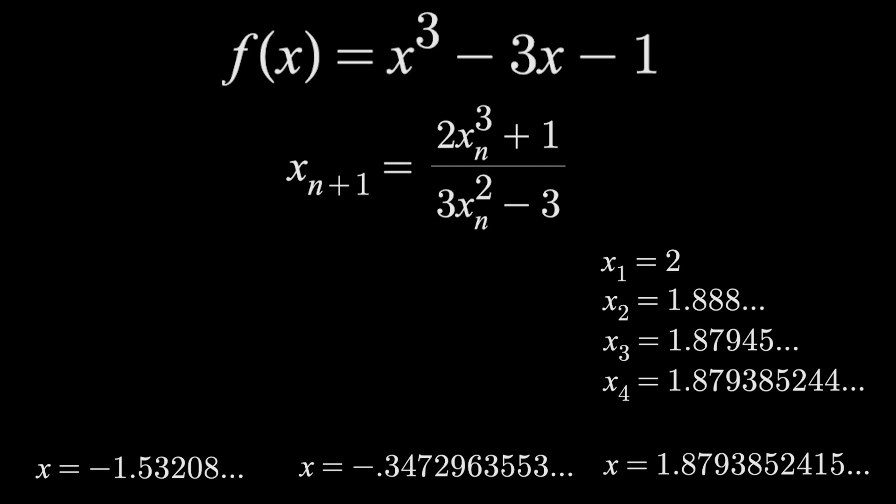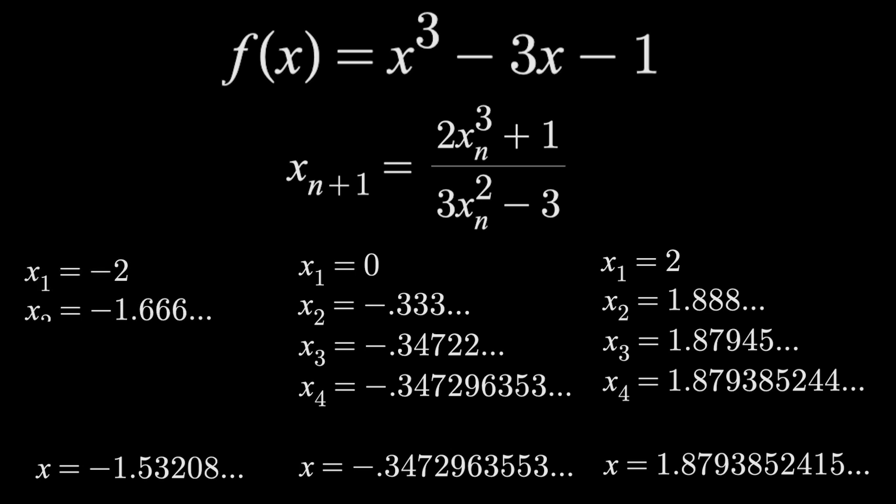We didn't have to start at 2, by the way. There's a range of numbers that would have worked. But we couldn't start anywhere, because if you start at x equals zero, for example, then iterate using the same formula, it'll find the middle zero this time. And if we start at x_1 equals negative 2, the formula finds the leftmost zero. Again, these could go on forever, getting infinitely close to the respective zeros, but I stopped after x_4 because they were already pretty accurate.